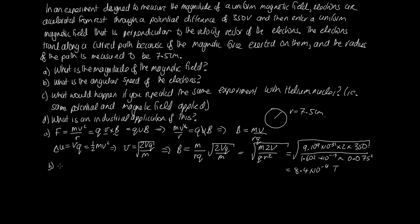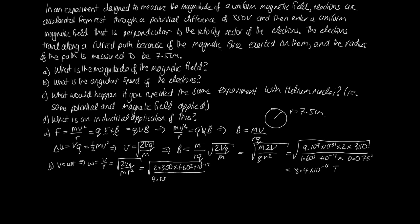For Part B, the angular speed: we know v = ωr, so ω = v/r. Since v = √(2Vq/m), we have ω = √(2Vq/m) / r, or equivalently √(2Vq/m) divided by r². Substituting in 2 × 350 × 1.602 × 10⁻¹⁹ divided by 9.109 × 10⁻³¹ × (0.075)² gives ω = 1.5 × 10⁸ radians per second.